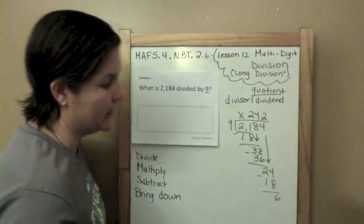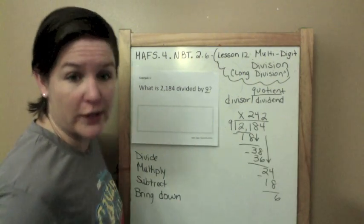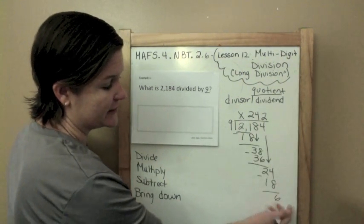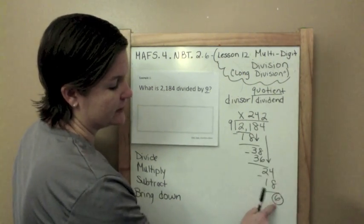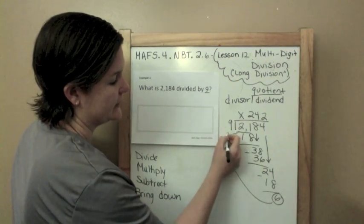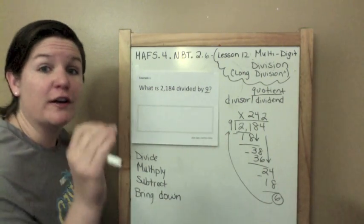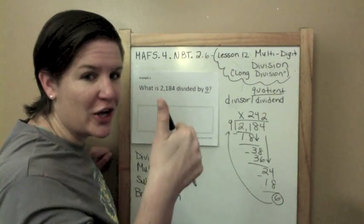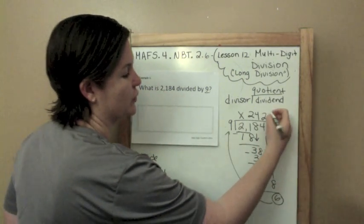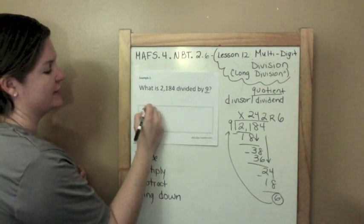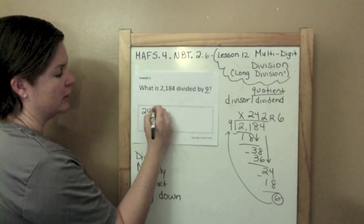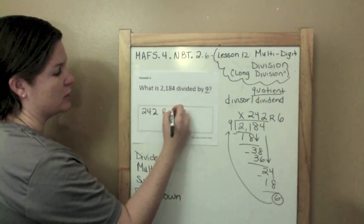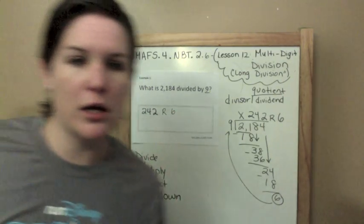That's my division step. Now I multiply: 2 times 9 is 18. Subtract them and I get 6. There's nothing else to bring down, at least not in fourth grade. In fifth grade you learn about decimals, but not today. So my answer would be 242. I have this 6, and this is good because the 6 is less than the 9. If your remainder is less than your divisor, you're good. That's a solid remainder. So it's 242 remainder 6.